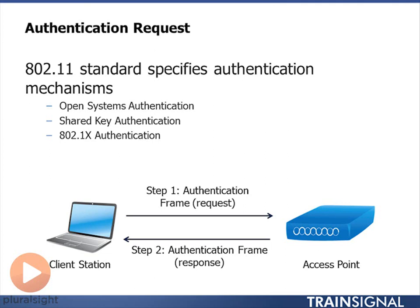You could also do 802.1x authentication, which is typically what you see being done in a business. There are really two ways of doing this. You can send in an authentication frame that triggers an 802.1x exchange with an authentication server, or you can do open system authentication at this stage and trigger 802.1x after you've associated and after you've got an IP address.